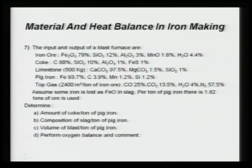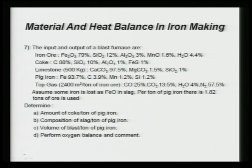Here is one more problem on material and heat balance in iron making, in continuation with the earlier problems. The problem involves inputs and outputs of a blast furnace: iron ore, coke, limestone, pig iron, and top gas. Note that the amount of top gas is given per ton of iron ore, not per ton of pig iron. So if you take the basis per ton of pig iron, you have to calculate the amount of top gas accordingly.